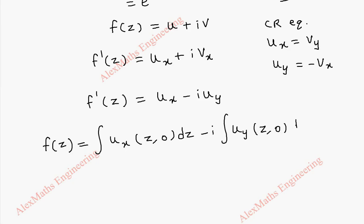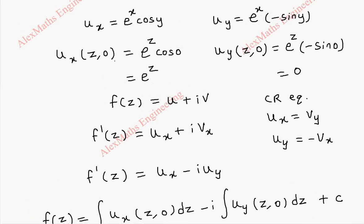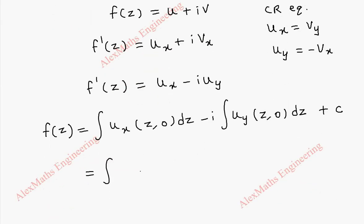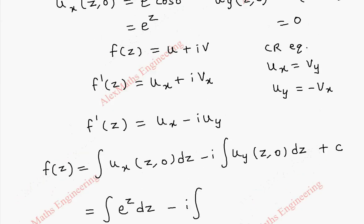And now we can replace u_x(z, 0) from here, which is e^z. So this is integral of e^z dz minus i times integral of u_y.